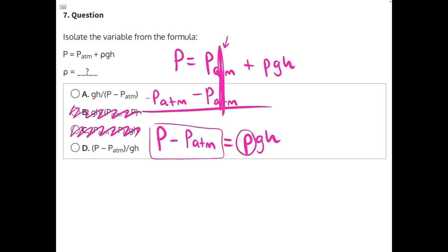ρ is our variable we're trying to isolate, so we need to get rid of g and h. g and h are both being multiplied to ρ, so we can use opposite operations and divide both sides by gh.